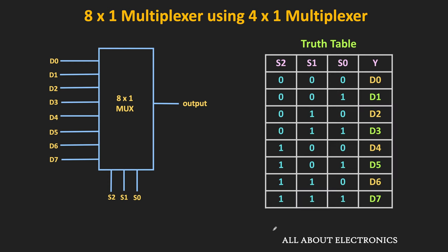As the number of inputs to the multiplexer increases, we also require AND gates and OR gates with more inputs. For example, in the 8-to-1 multiplexer, we require 8 four-input AND gates and 1 eight-input OR gate. In such cases, we can use smaller multiplexers to design larger ones.